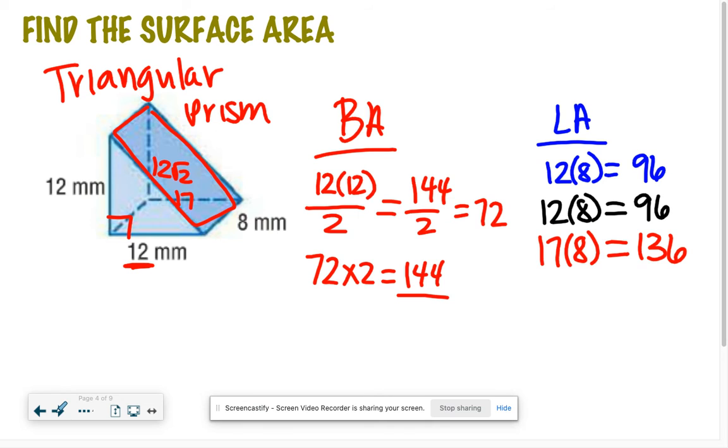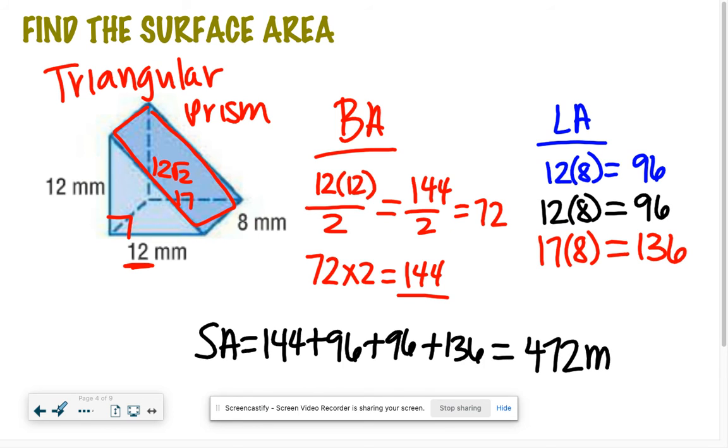So now for our total surface area, we can add up all of those numbers: 144 plus 96 plus 96 plus 136, for a grand total of 472 millimeters squared.